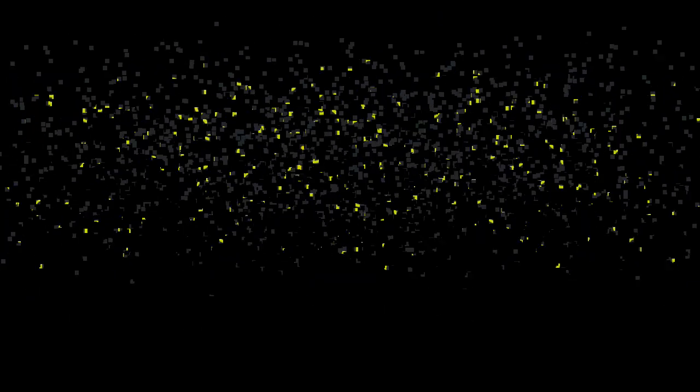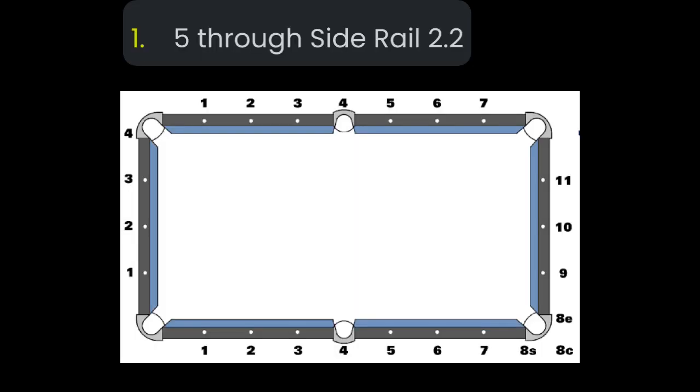Finally, I'm going to show you four examples of using the numbers. What I'm going to do is give you a number pattern I want you to visualize, and then you're going to try to figure it out before I show it, but I'm going to show it pretty quick, so pause if you want to. First, what would five through side rail 2.2 be?